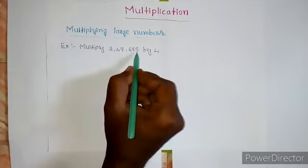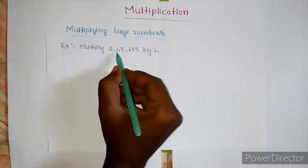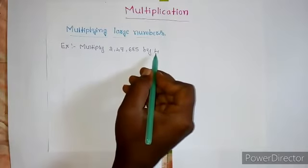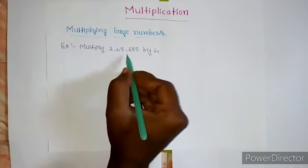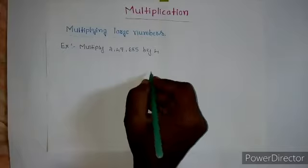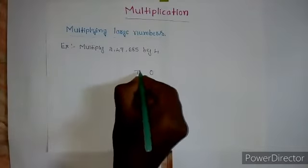Students, all of you see here, this is how many digit number? One, two, three, four, five, six. Six digit number. We are going to multiply by four. Four is a one digit number. Now I am going to place this number in a place value chart.